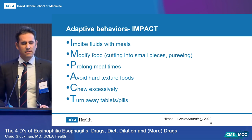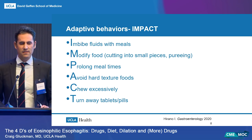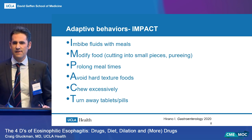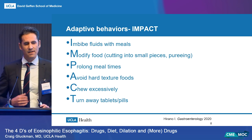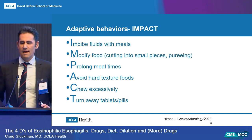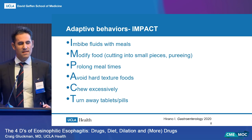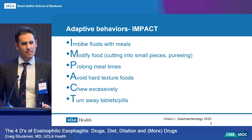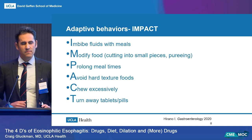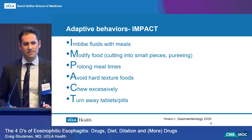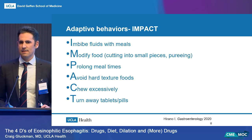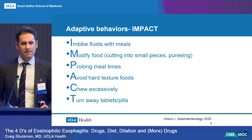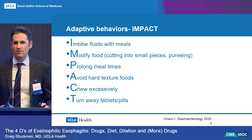Be careful when taking history from patients and determining whether symptoms correlate with disease severity, because EOE patients have learned multiple adaptive behaviors over the years. There is often a very long diagnostic delay. These patients might imbibe fluids with meals, modify how they eat by cutting food into small pieces or pureeing, eat much longer than family members, avoid harder textured foods, chew excessively, and sometimes even avoid tablets or pills. So there is not often a good correlation between symptoms and severity.